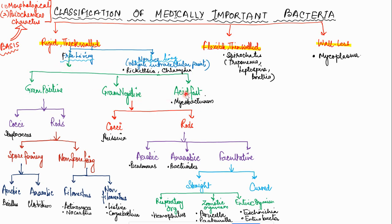The second type is the flexible thin-walled bacteria, examples of which are Treponema, Leptospira, and Borrelia. The third class is wall-less bacteria, of which the example is Mycoplasma.